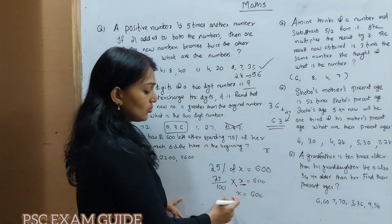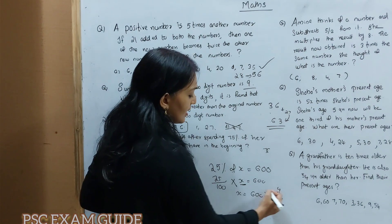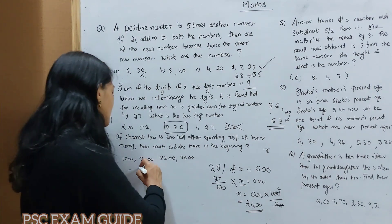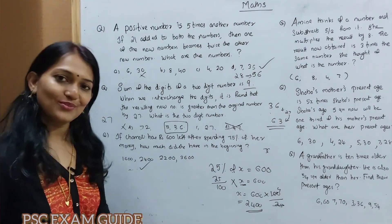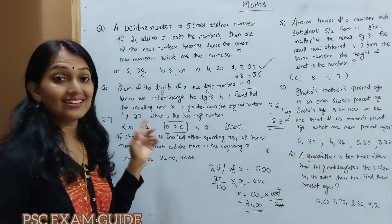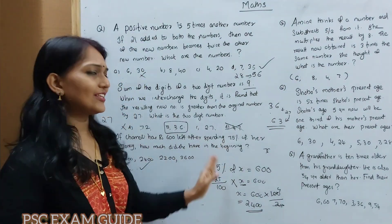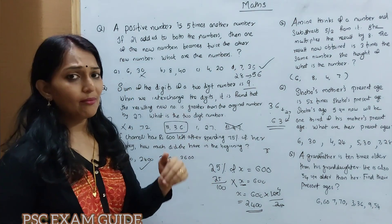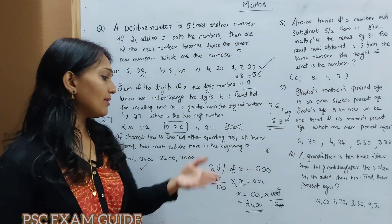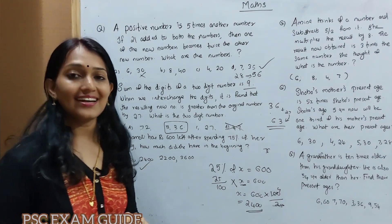We are going to use 25%. This is 25%. I mean 600. If you have a number, it will be 2400. 25% of the total equals 600, so the total is 2400.